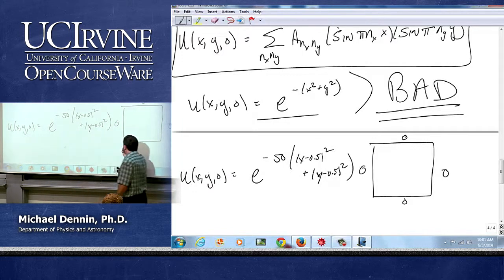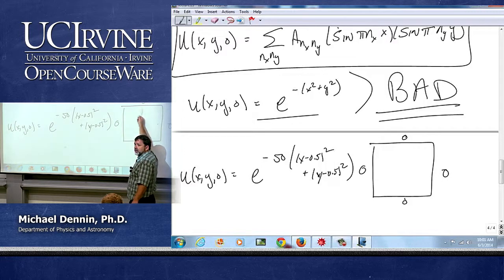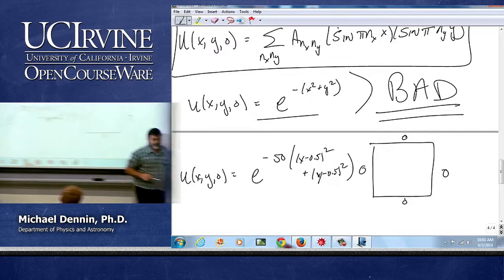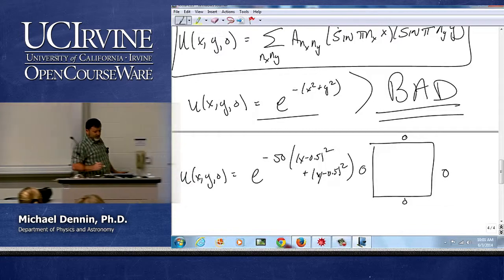And so it's going to be, within any numerical precision, it's going to be 0 on the boundaries, so we're going to be ok there. So that's the good thing.